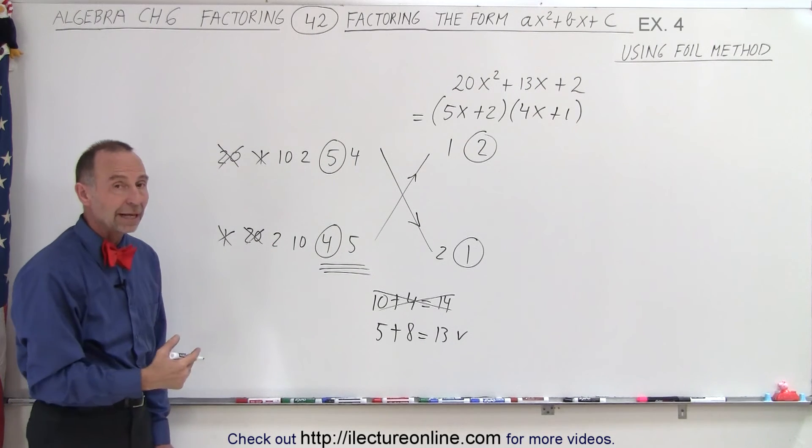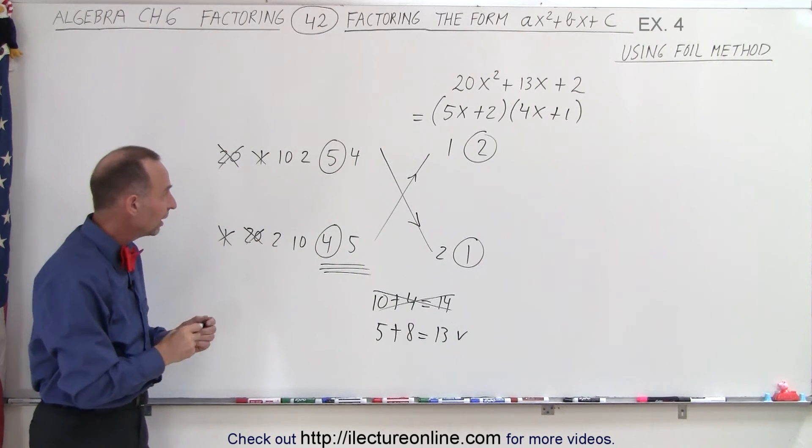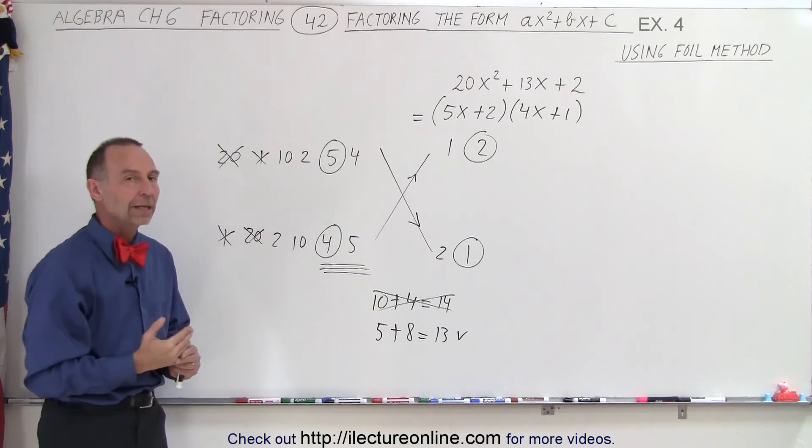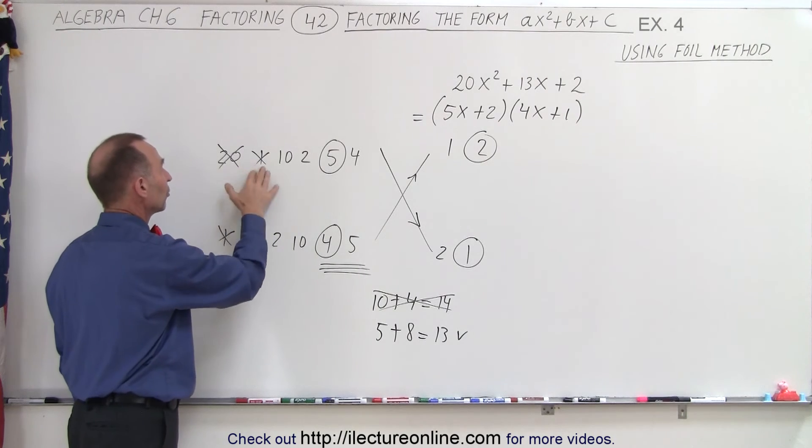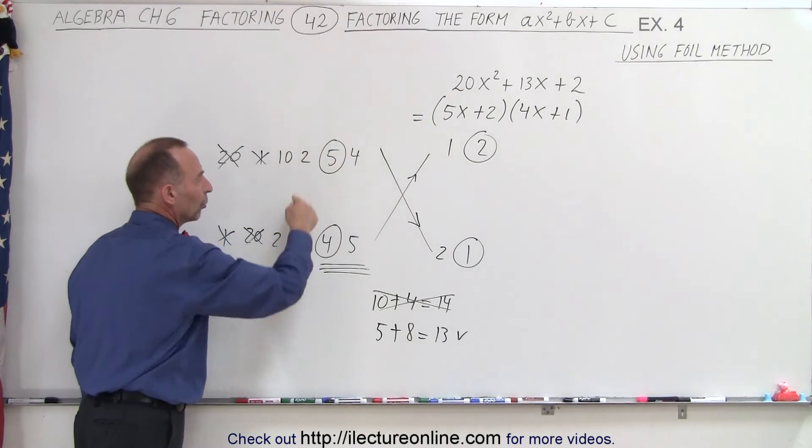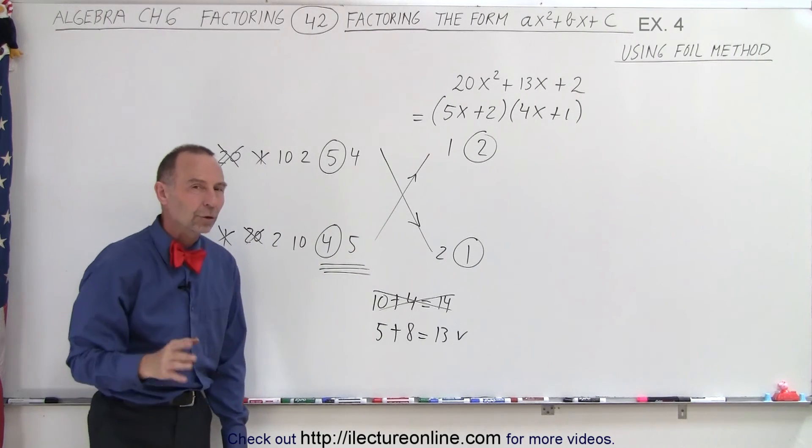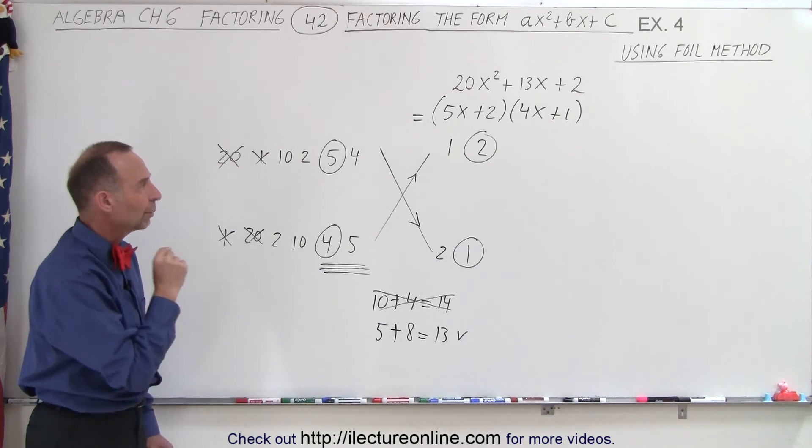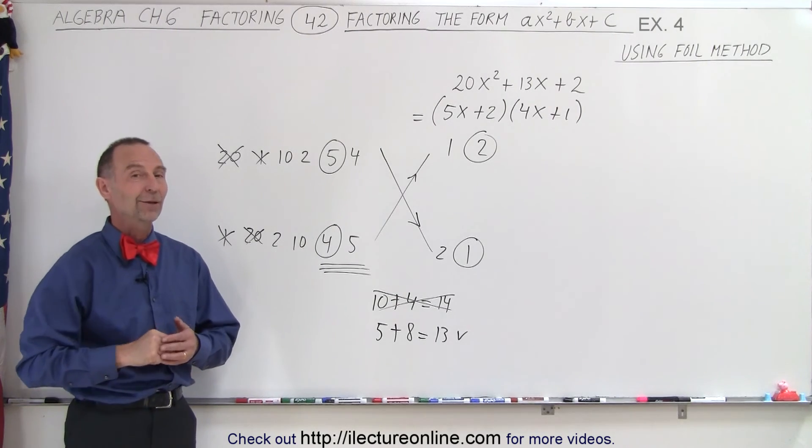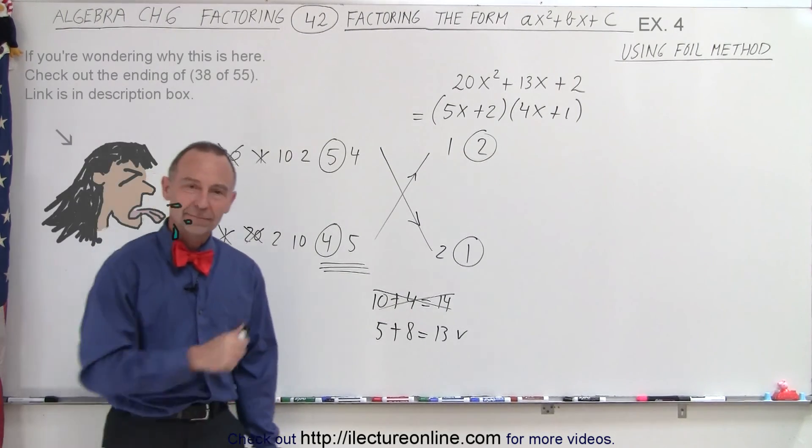Again the FOIL method can be a nice quick method, especially if you don't automatically without thinking just go through all the possible combinations. You simply realize that these big numbers are too big to give me the correct middle term, and you right away could do what looks like the most likely combinations that will give you the correct factored form. And that is how we do that using the FOIL method.